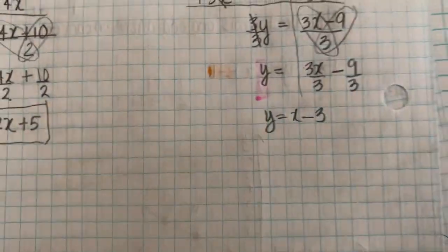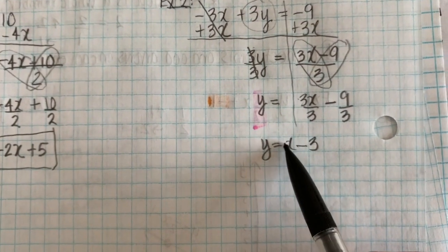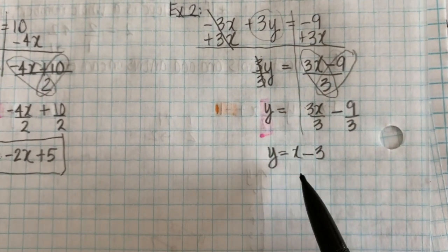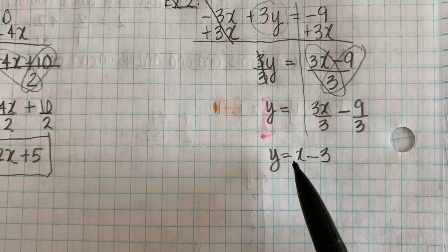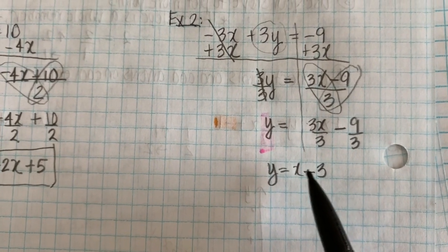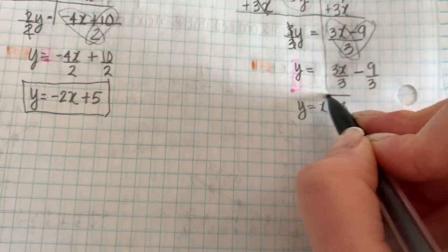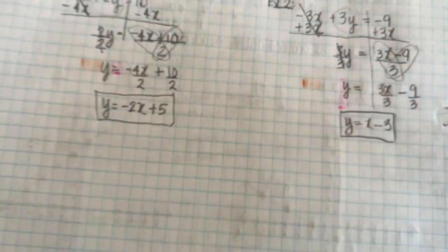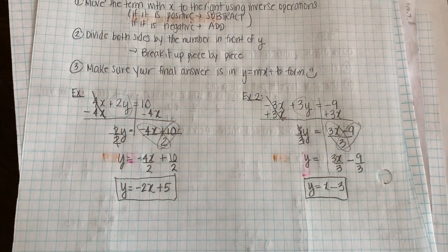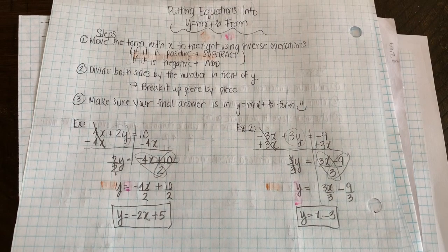And then finally, we're going to just check that this is in y equals mx plus b form. Y equals mx. The m here would just be 1, who's so skinny you can't see it. Plus b, which would be negative 3. So that is my answer. And I hope that this tricky skill has been slightly simplified for you.